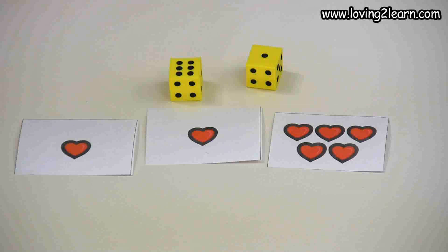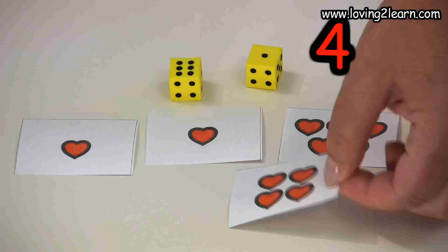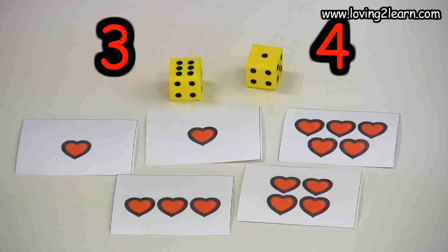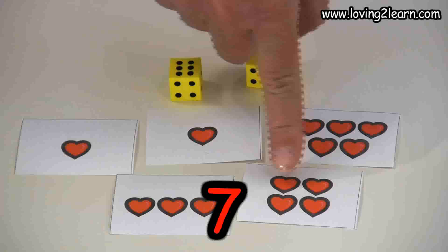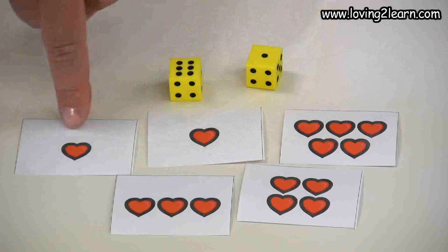Then I'm going to do another combination, which will be four and three, which will also equal seven. Four, five, six, seven. Let's just double check this. Five, six, seven.